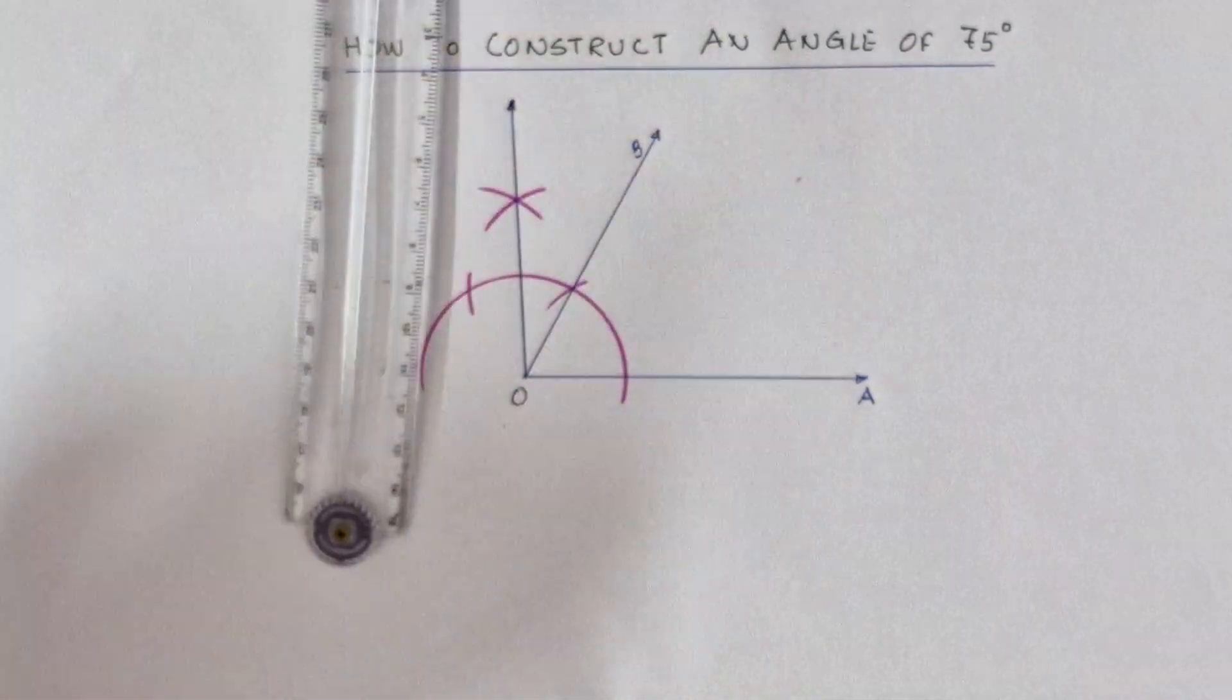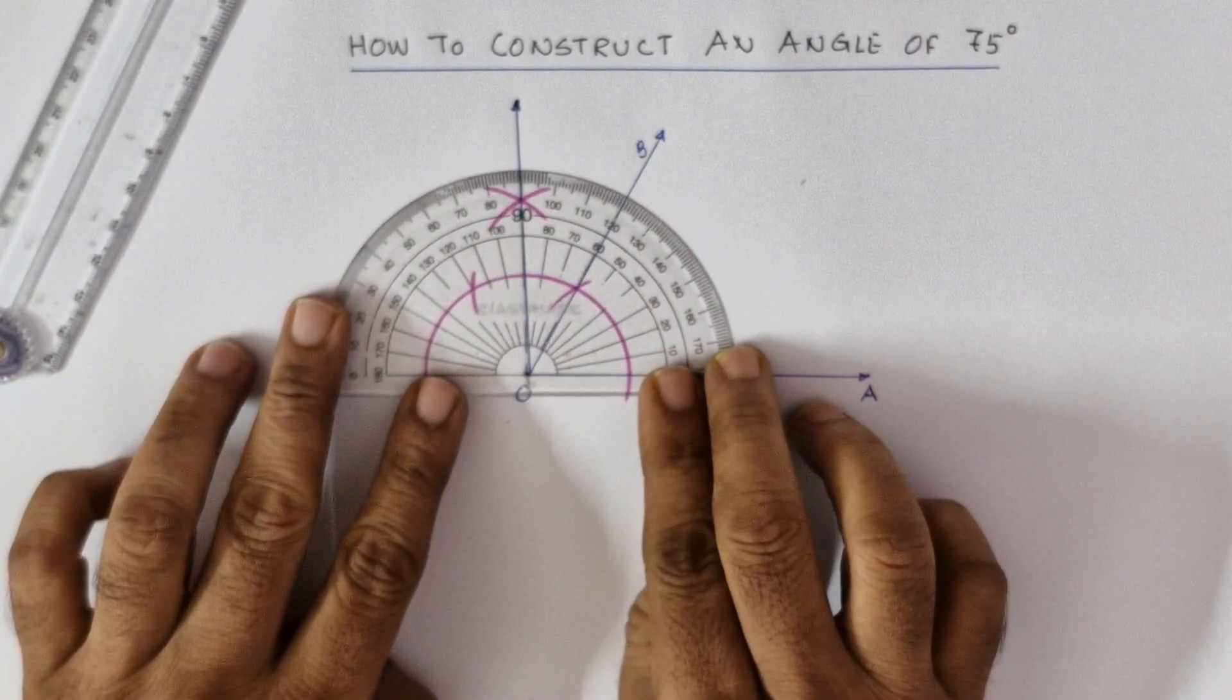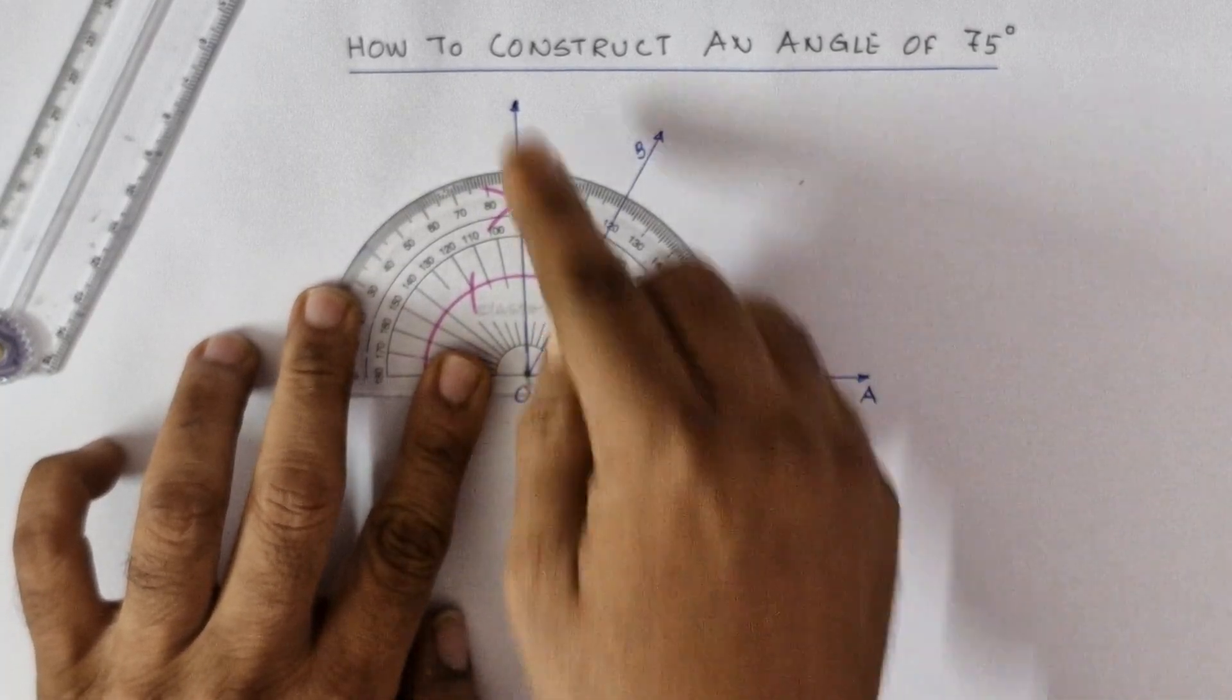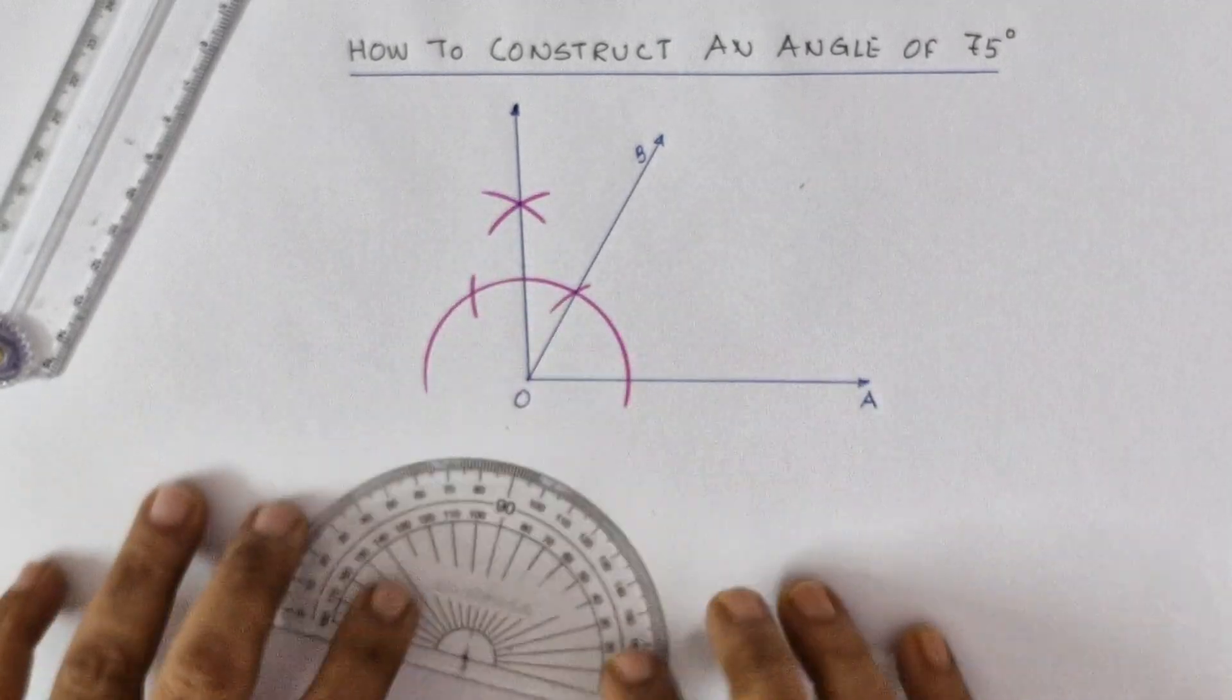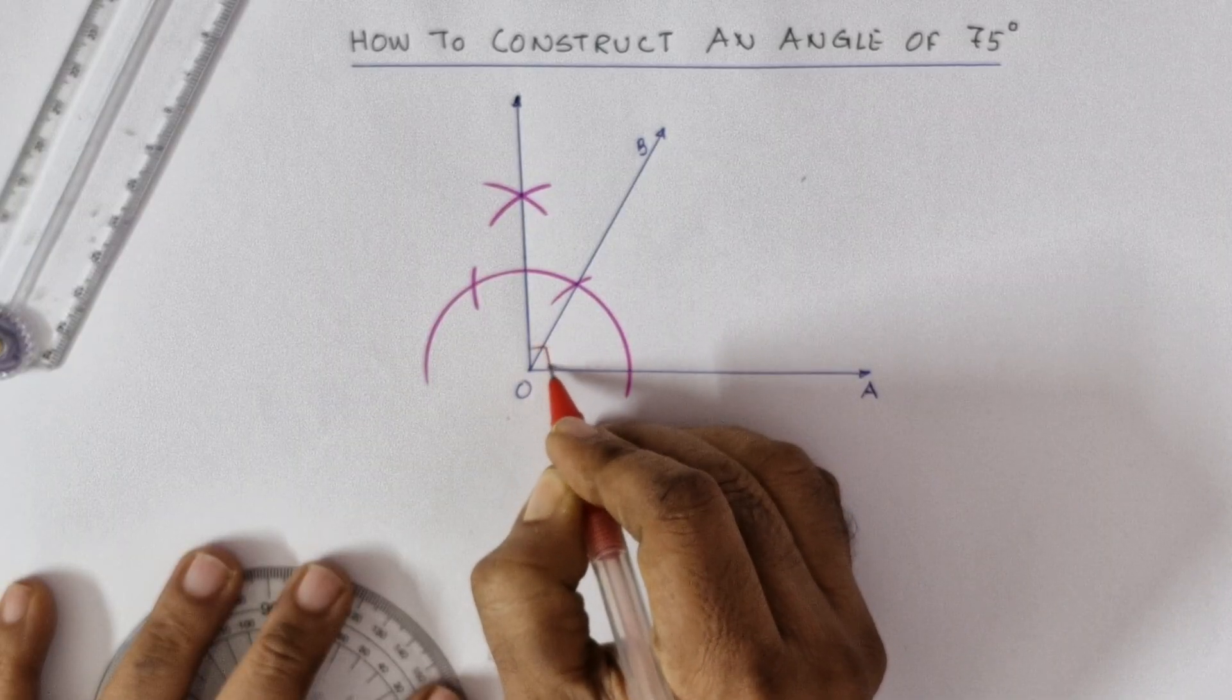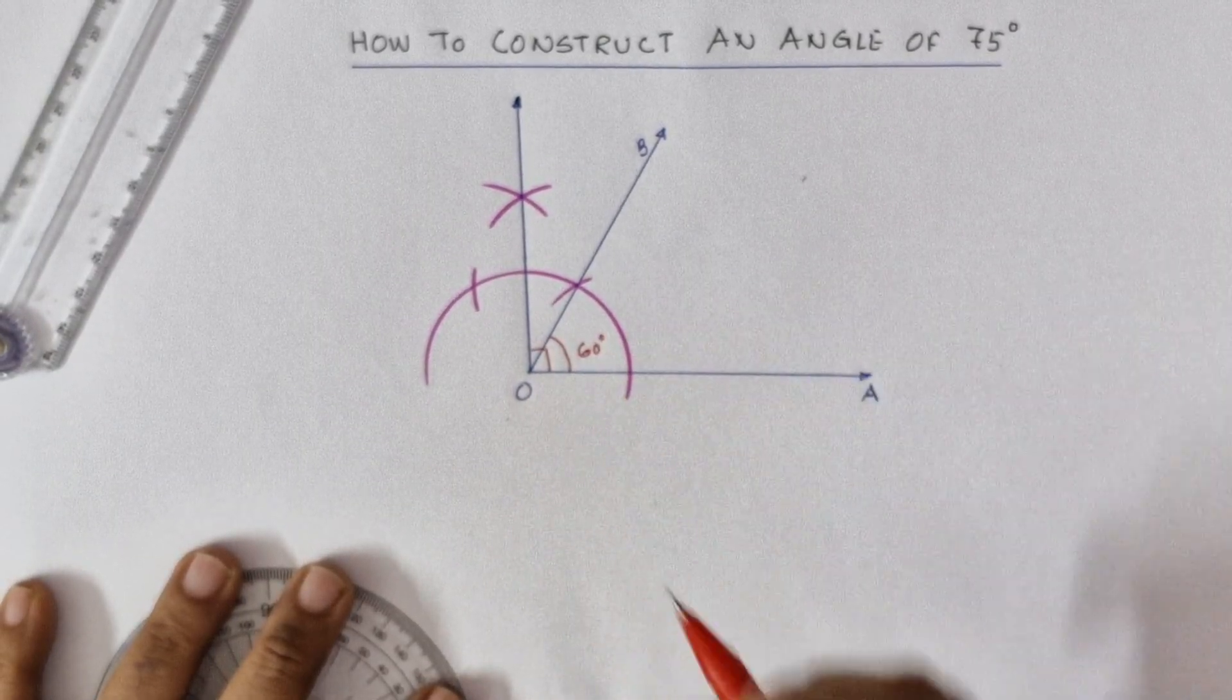Let's check it out. See, now you have 90 degrees. So you have now 90 degrees and you have a 60 degree. Let's mark them properly - this is 90 and this is 60 degrees.